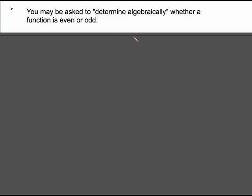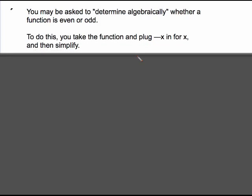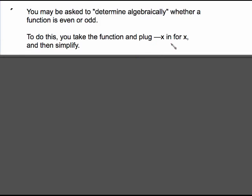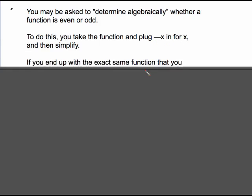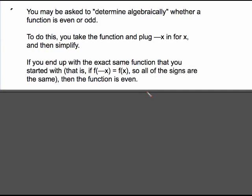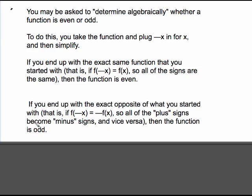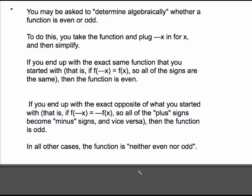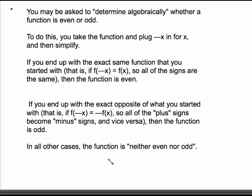Another concept you'll have to deal with, with functions both graphically and algebraically, is this idea of an even or odd function. To do this, you're going to take the function and plug in negative x everywhere you see an x and then do the simplifying. If you end up with the exact same function you started with, the function is even — meaning f of negative x equals the original function. If you end up with the exact opposite, meaning f of negative x equals negative f of x, all the plus signs become minus and vice versa, then the function is odd. In all other cases, the function is neither even nor odd. The definition sounds daunting but once you do a couple examples it's really not that bad.